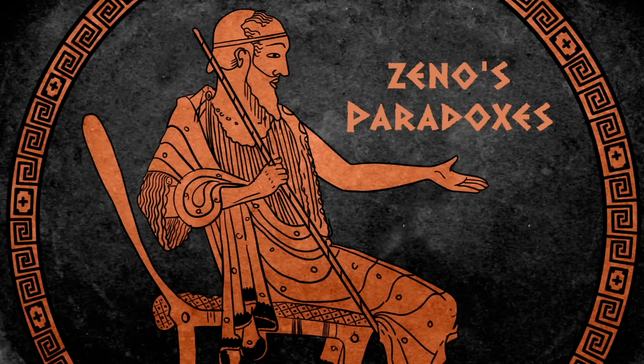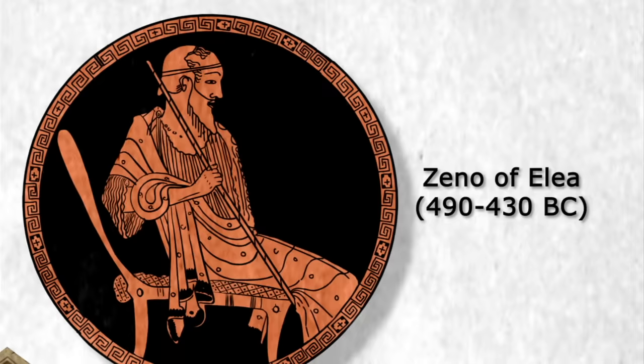This is Zeno of Elia, an ancient Greek philosopher famous for inventing a number of paradoxes, arguments that seem logical but whose conclusion is absurd or contradictory.